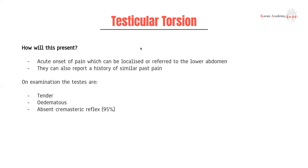How does this present? It presents with acute pain that's typically localized to the testes but can present in the lower abdomen. It's a really important differential to consider when a young male comes in with any lower abdominal pathology — always rule out testicular torsion. They can also report a history of similar past pain; about 8% have had a previous torsion that self-resolved. On examination, the testes are tender, edematous, and you'll also have an absent cremasteric reflex, which is absent in 95% of patients with torsion.